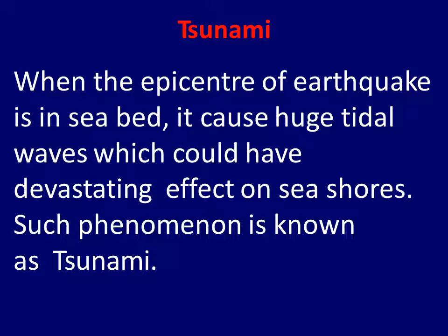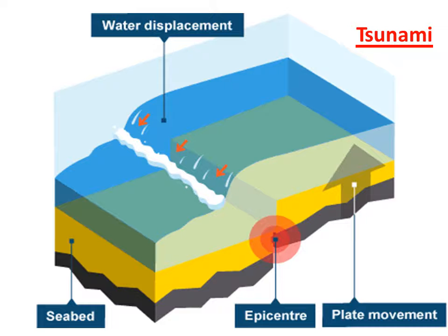When the epicenter of an earthquake is on the seabed, it causes huge tidal waves which could have a devastating effect on the seashore. Such a phenomenon is known as a tsunami. You can see the picture showing the seabed epicenter and the resulting tsunami.